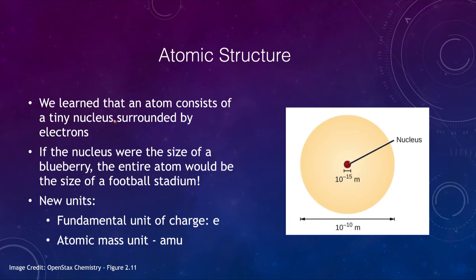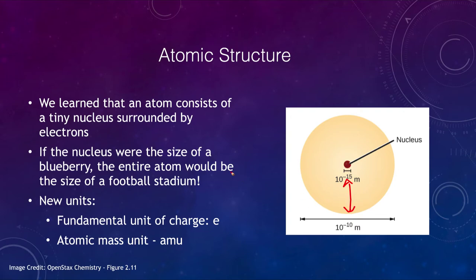We looked previously that an atom consists of a very tiny nucleus surrounded by electrons. Note that this is not even close to being to scale, as there should be five orders of magnitude between the size of the nucleus and the size of the electron cloud — that would be 10 to the fifth power, or a hundred thousand times. So the nucleus would be 100,000 times smaller than the electron cloud.